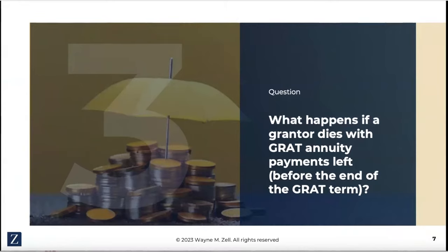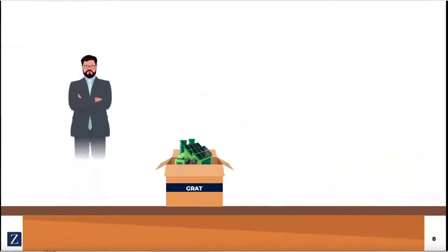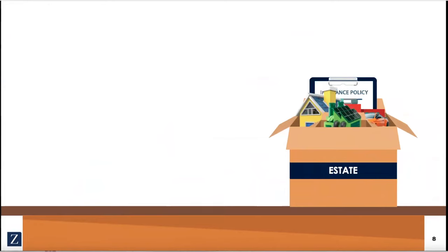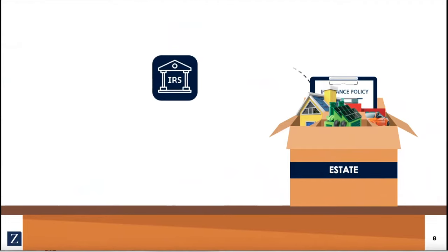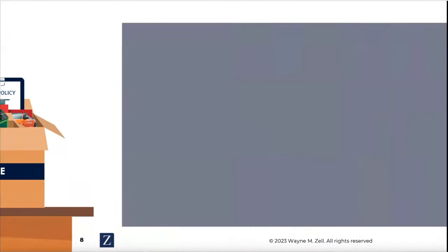What happens if a grantor dies with a GRAT annuity that hasn't been paid out yet — in other words, there's still time left on the GRAT term? Well, this is commonly referred to as mortality risk, and it's a potential downside of a GRAT. If the grantor dies before the trust term ends, all the remaining assets are going to be included in the grantor's estate, and it defeats the primary purpose of the GRAT, which is shielding the asset growth from estate tax.